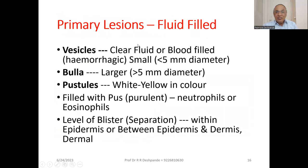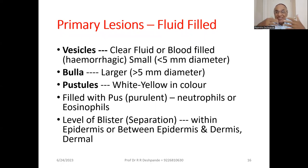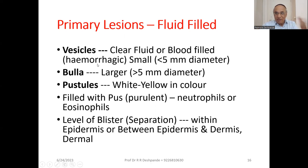Primary lesions — now the third type: fluid-filled. In this type, there is some fluid inside, like a cyst. In skin problems, they are called vesicles. Vesicles contain clear fluid or they may be blood-filled — when they are blood-filled, that is called hemorrhagic vesicles. These vesicles are less than 5 millimeters in diameter.